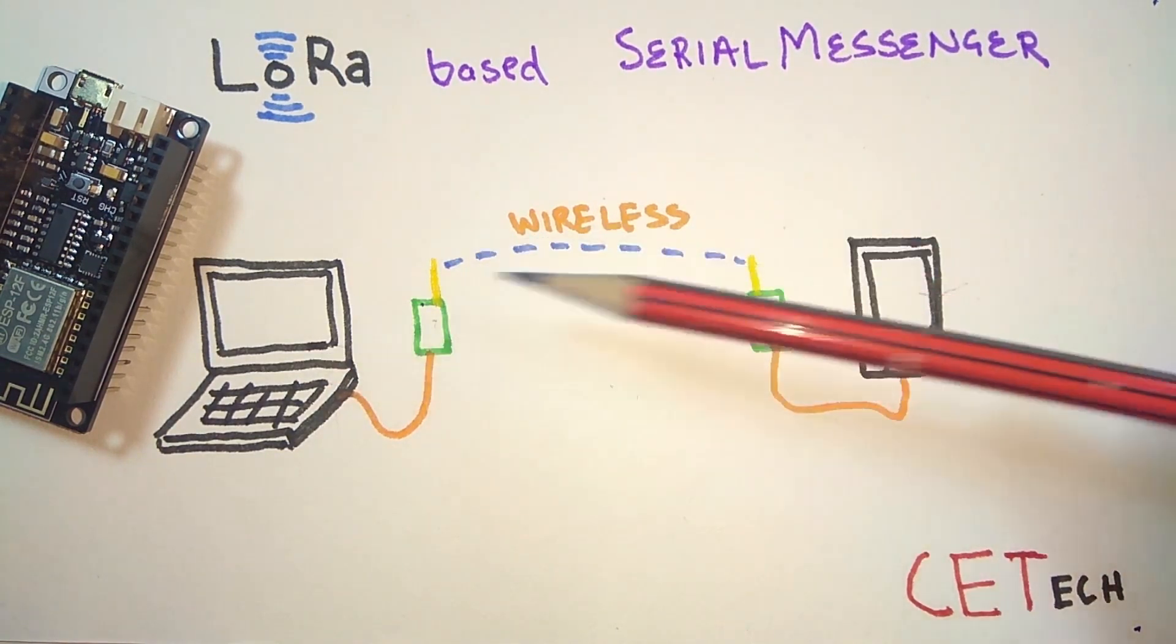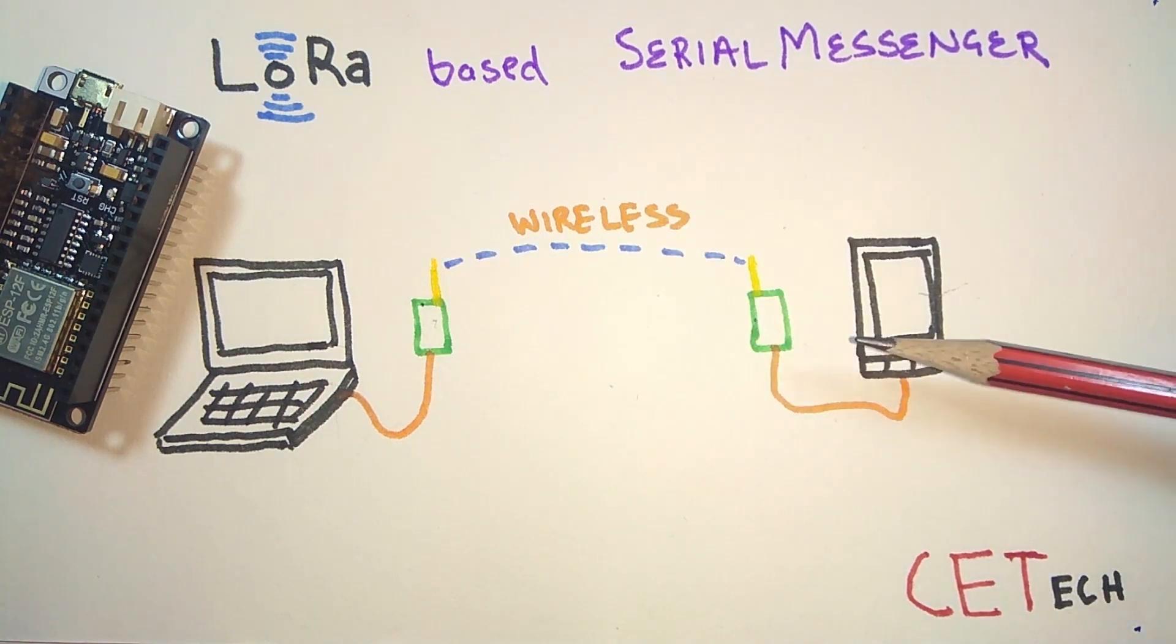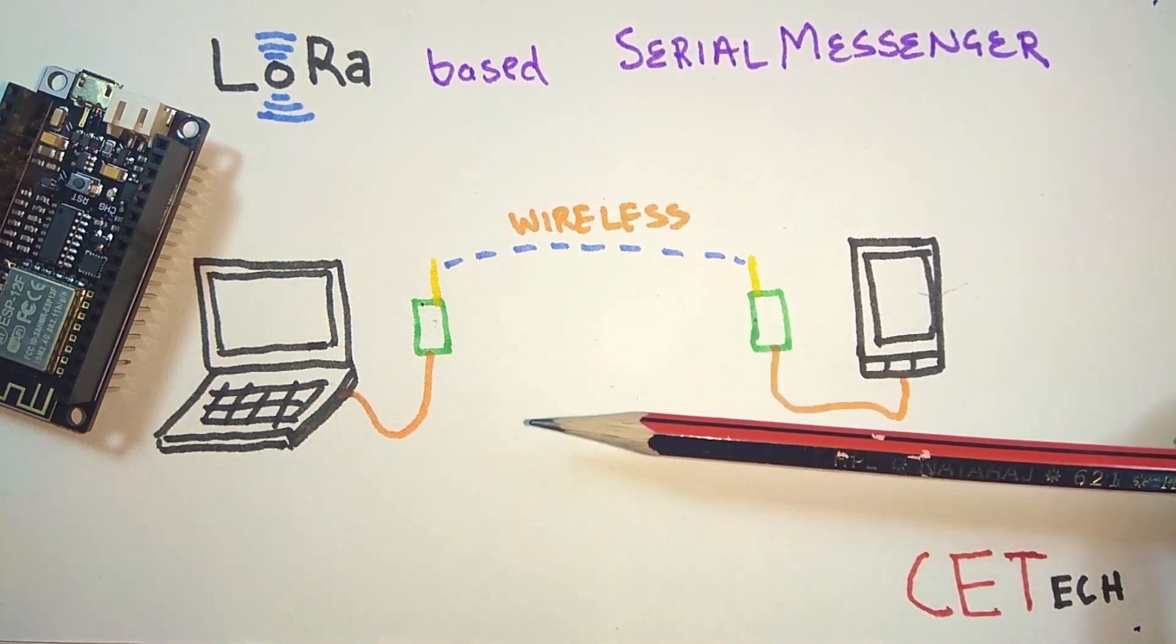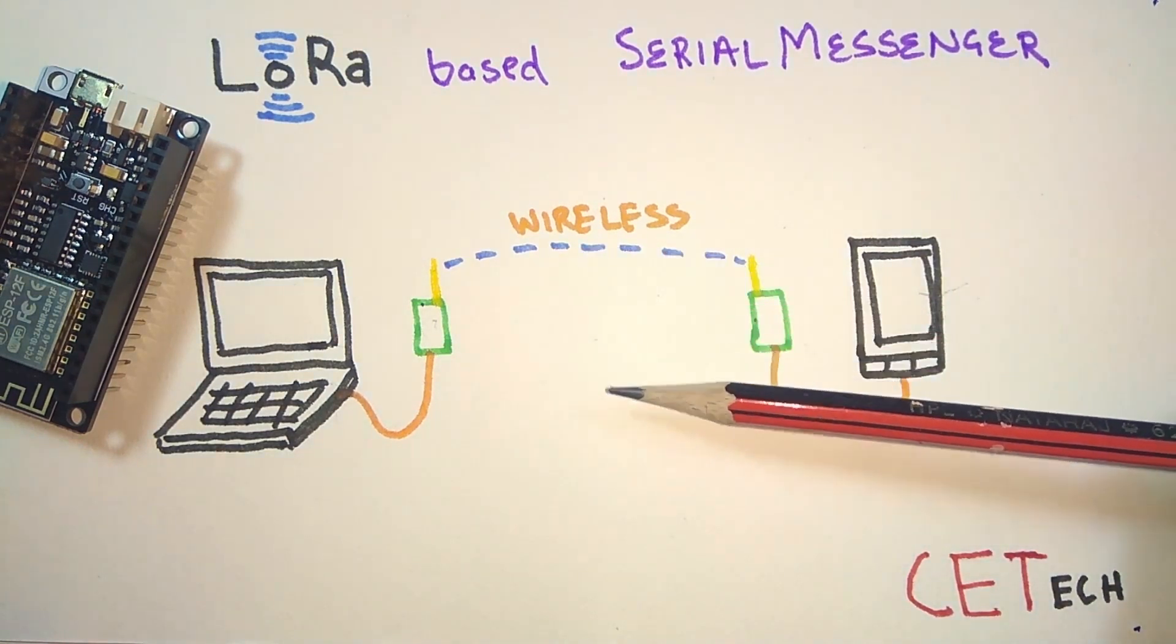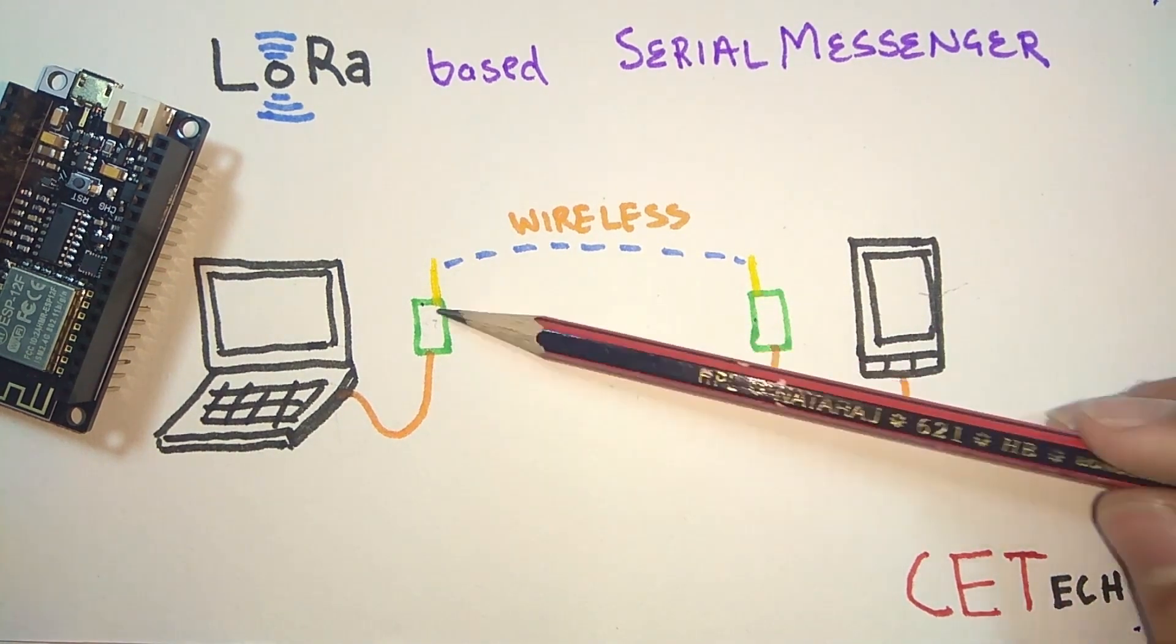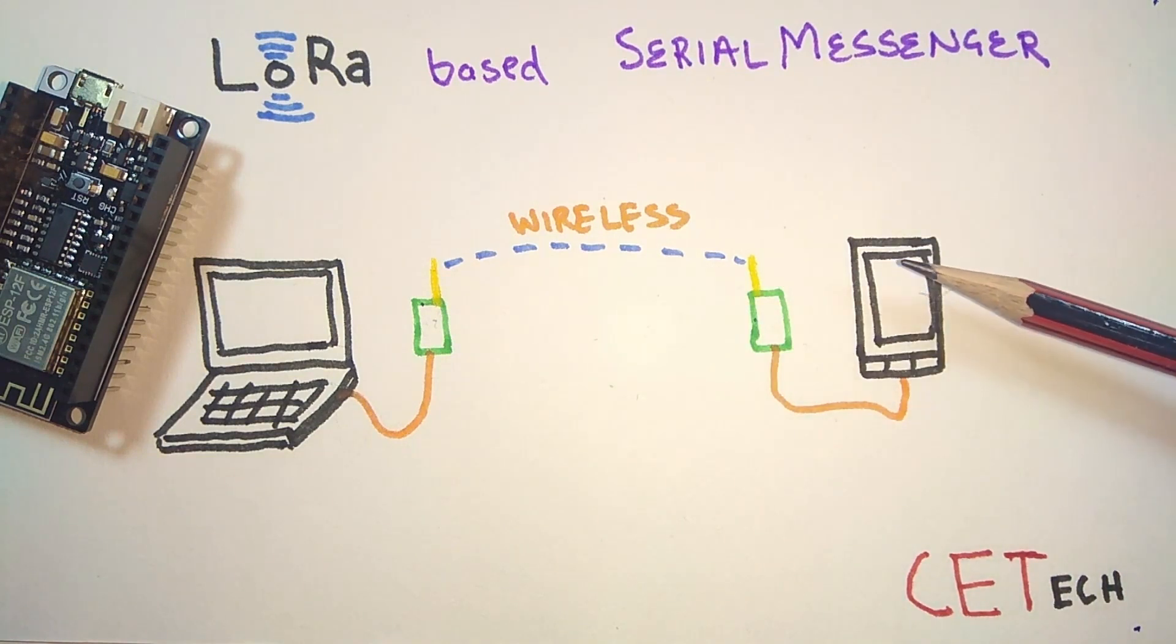Using LoRa, we'll be able to chat between these two devices. This will be a very basic project so we can know how LoRa works and what is its capability. The range will be anywhere from one kilometer to around six kilometers. So let's get started.